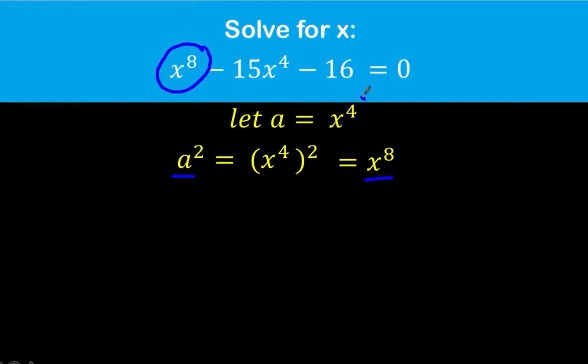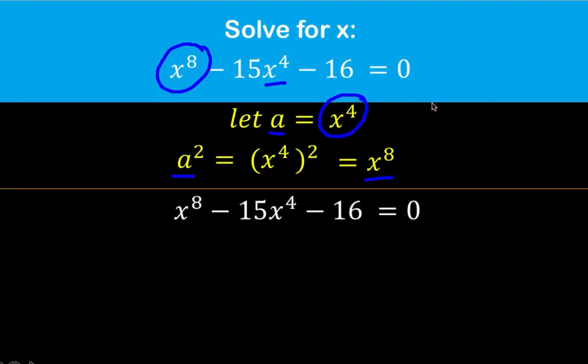And we now have our substitution for this x to the 4th, which is a. And with this as our substitutions, then from the original given equation, we can now replace this x to the 8th by the value of x to the 8th, which is a to the 2nd. So this x to the 8th is now a to the 2nd. Similarly, since in our substitution x to the 4th is equal to a, then this x to the 4th now is replaced by a. All the rest are just copied.